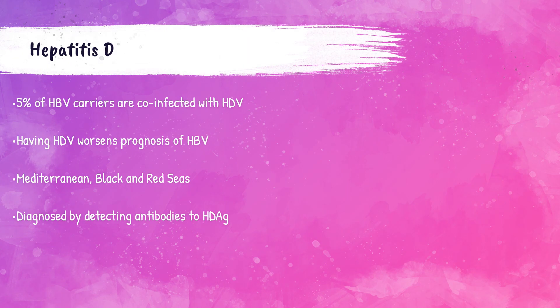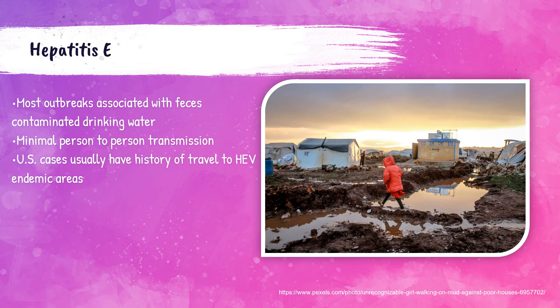Hepatitis D, or HDV, is another viral hepatitis infection. Around 5% of patients with HBV are also infected with HDV, and it is diagnosed by the detection of antibodies to the antigen HDAg. Hepatitis E, or HEV, is transmitted through the fecal-oral route and is commonly associated with countries where drinking water is contaminated with feces.